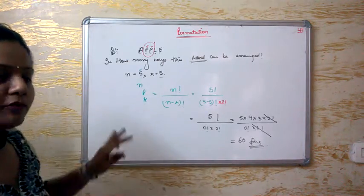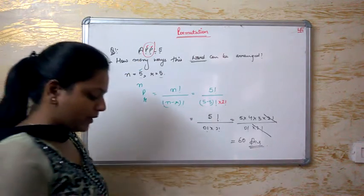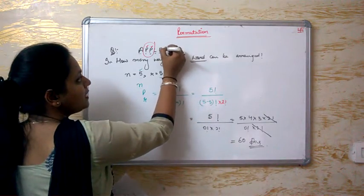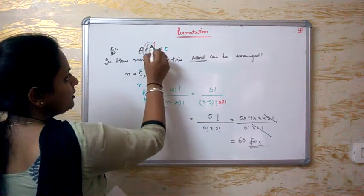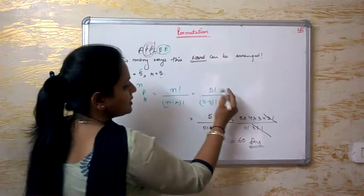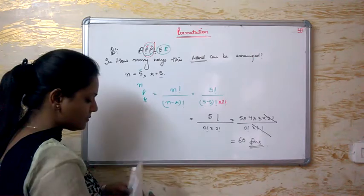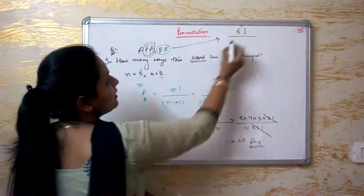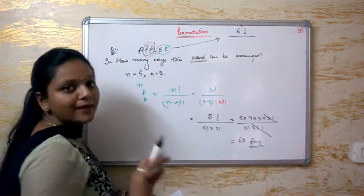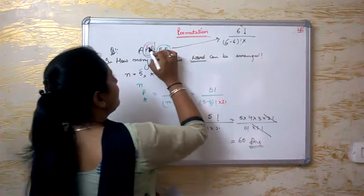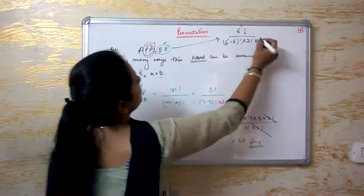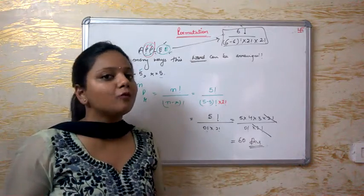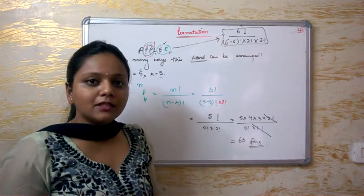So the answer is 60 — these are the number of ways in which APPLE can be re-arranged. Now for this variety of questions where letters repeat, if we added another E to make the word APPLEE, then both P repeats twice and E repeats twice. The total letters become 6, so the formula becomes 6 factorial upon 2 factorial into 2 factorial, giving the answer for that word.